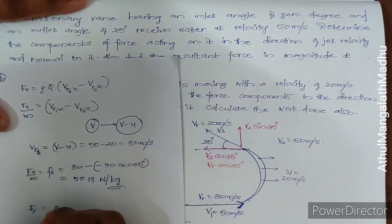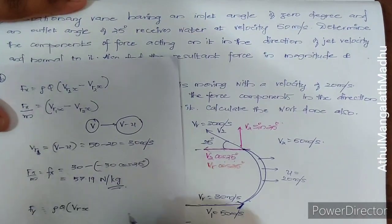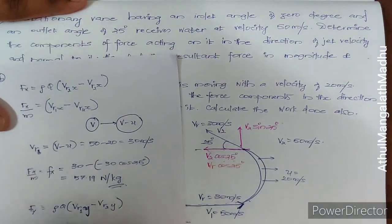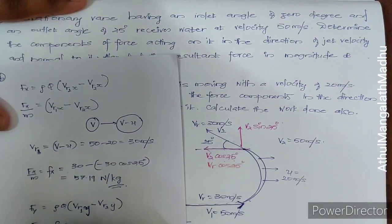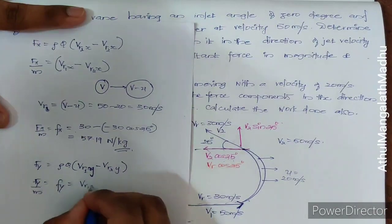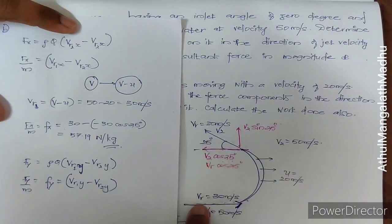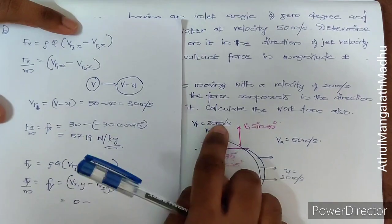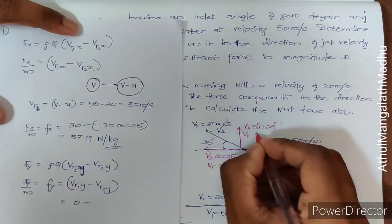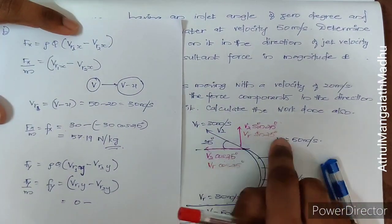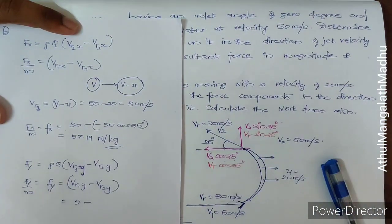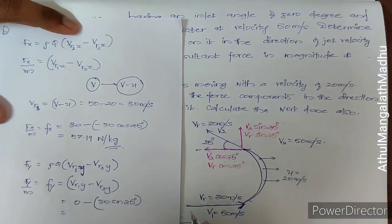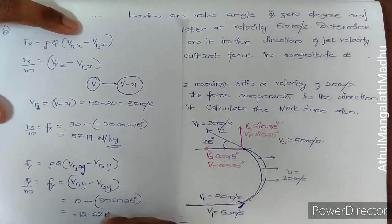Similarly for fy, we use Fy = ρq(Vr1y − Vr2y). The initial relative velocity has no y-component, so Vr1y = 0. The final relative velocity component in y-direction is Vr sin25° = 30 sin25°. So fy = 0 − 30 sin25° = −12.67 Newton per kilogram.